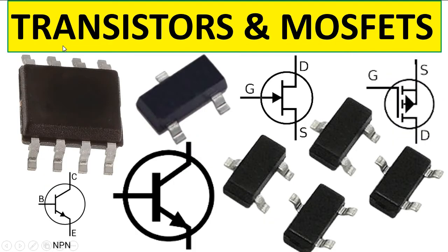Here are transistors and MOSFETs. They have the same basic working principle but with small differences. The transistor symbol always shows an arrow that determines the type — PNP or NPN. When the arrow points from gate to source, it indicates NPN. The MOSFET symbol shows gate, drain, and source. A MOSFET with eight pins typically has three pins for source, one for gate, and four for drain.